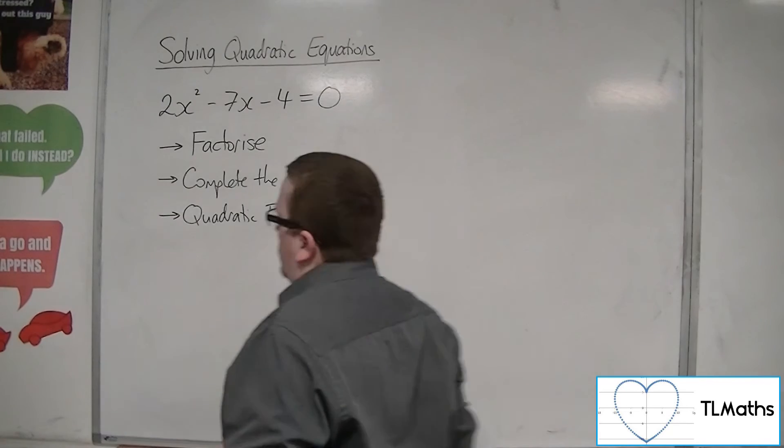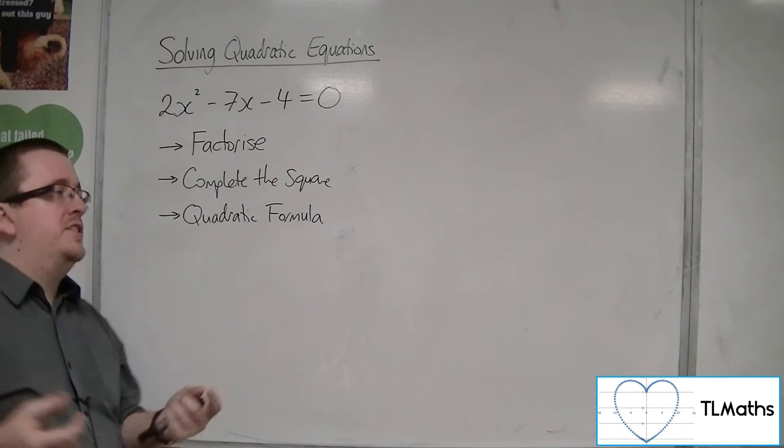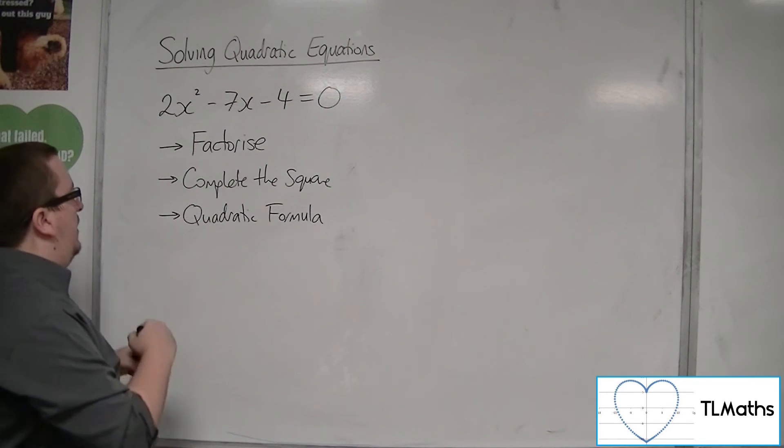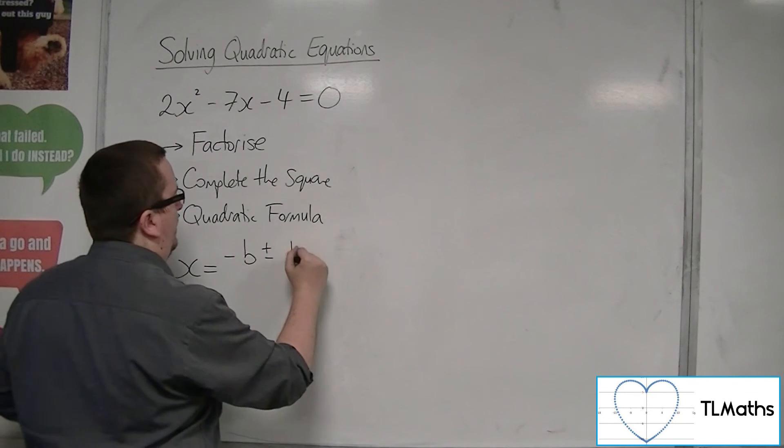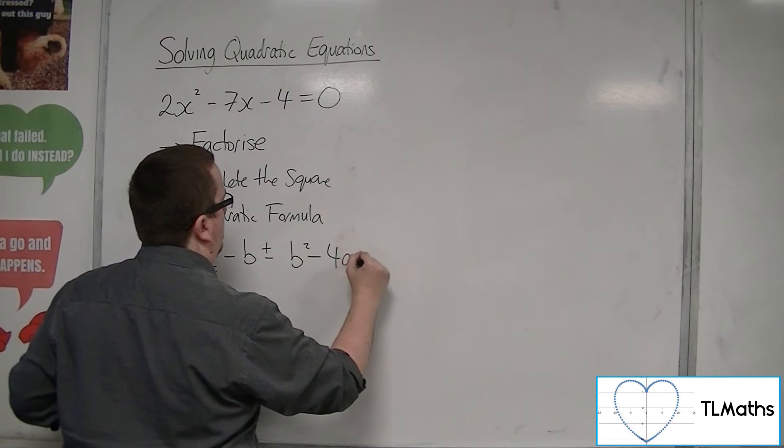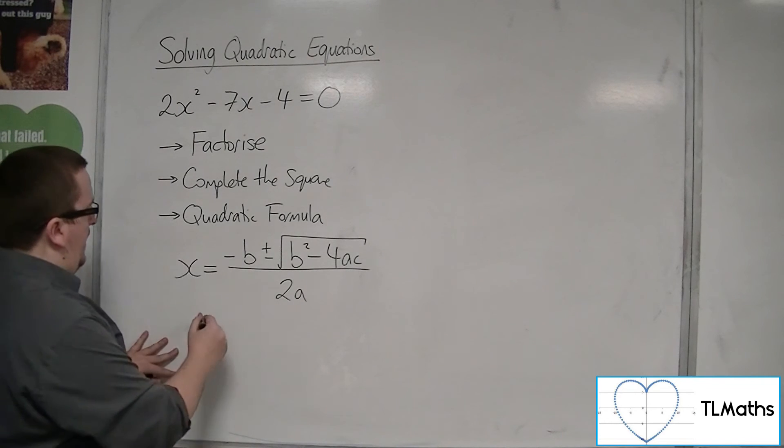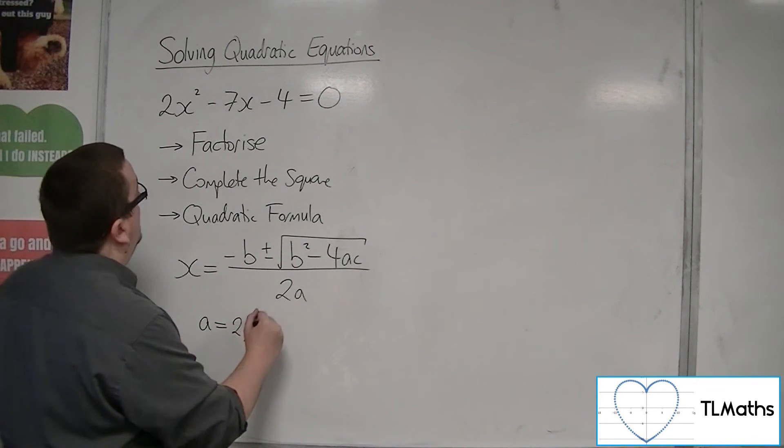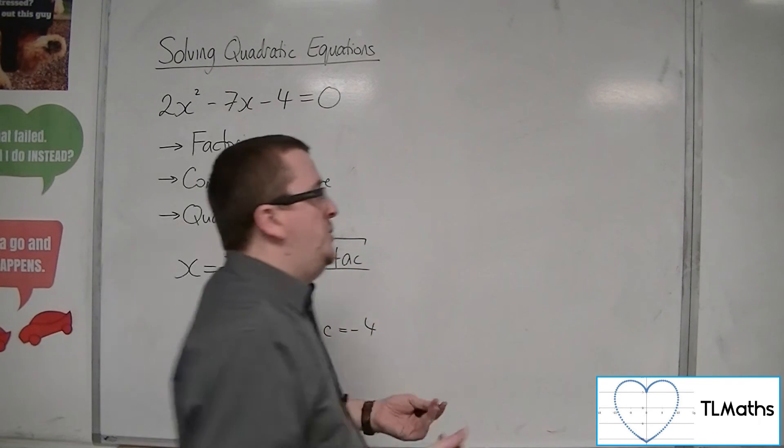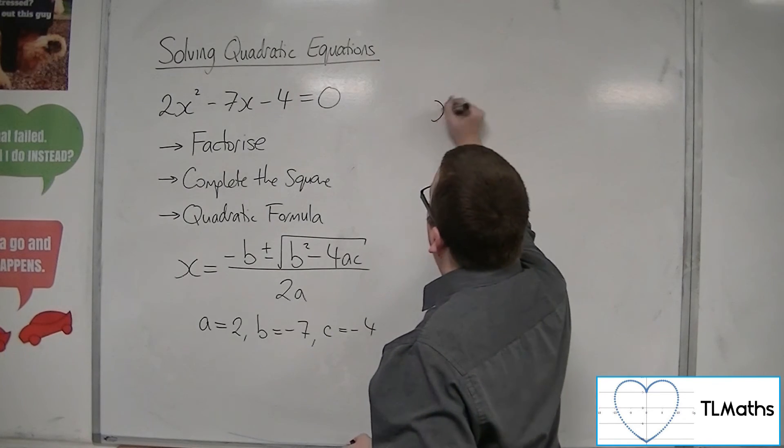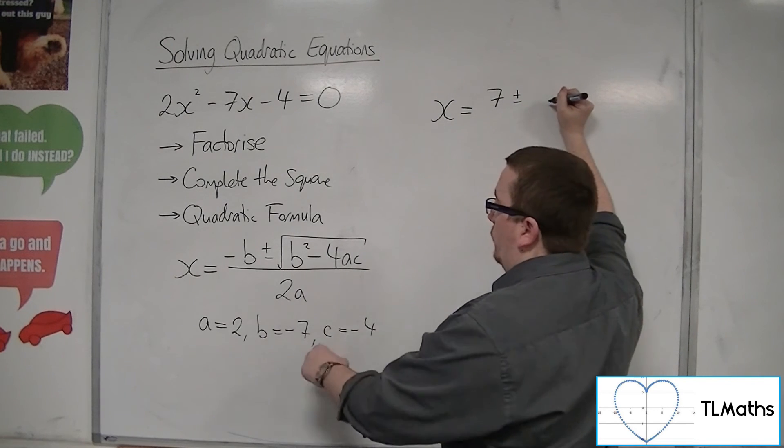Now obviously the quadratic formula does require you to know the quadratic formula and how to substitute these values in. So the quadratic formula is x equals minus b plus or minus the square root of b squared minus 4ac all over 2a.